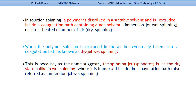In dry spinning systems, the polymer is dissolved in a suitable solvent and extruded into a coagulation bath containing a non-solvent, or with the help of hot air in the case of dry spinning. In both systems the solvent is removed — either by a chemical bath or by evaporation using hot air.